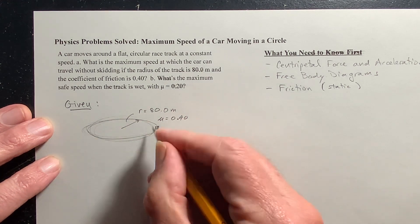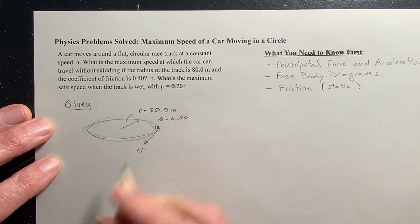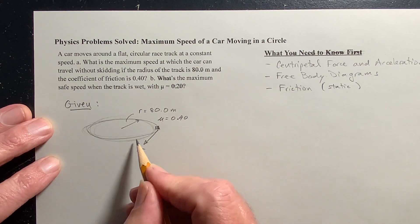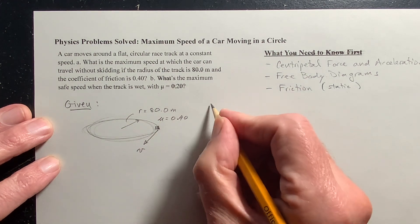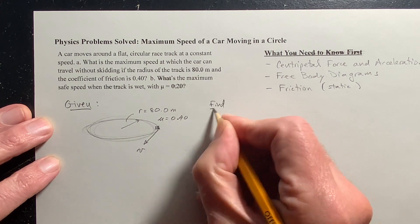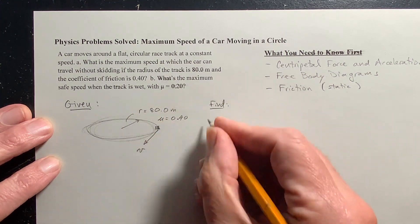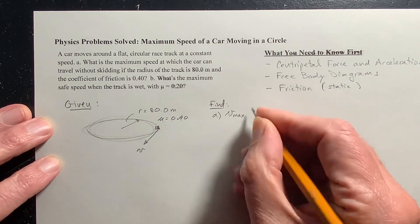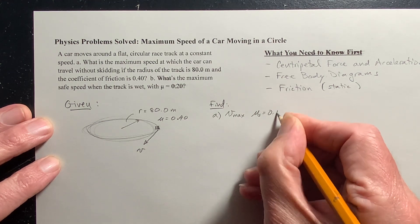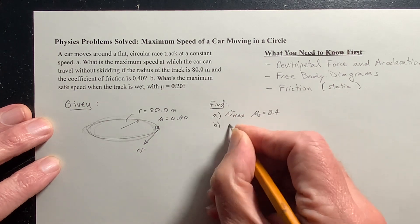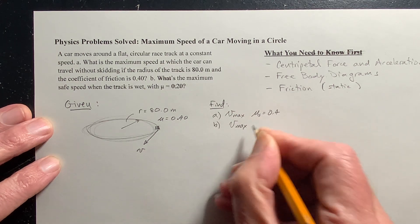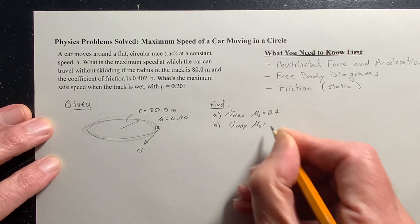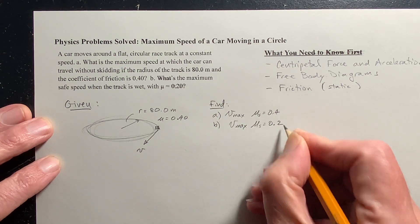Now this car is moving at a constant speed. I'll call that v. So this is uniform circular motion. And what are we trying to find? We're trying to find v max if the coefficient of static friction is 0.4. And then in part b, we want the same thing, but with a different static coefficient of 0.2.